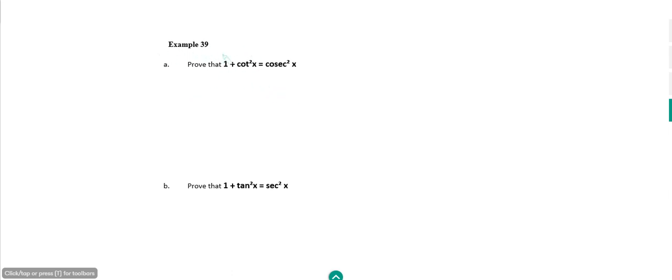Now we're going to look at example 39, which is one of these Pythagorean identities in cot and cosec, and also sec as well.